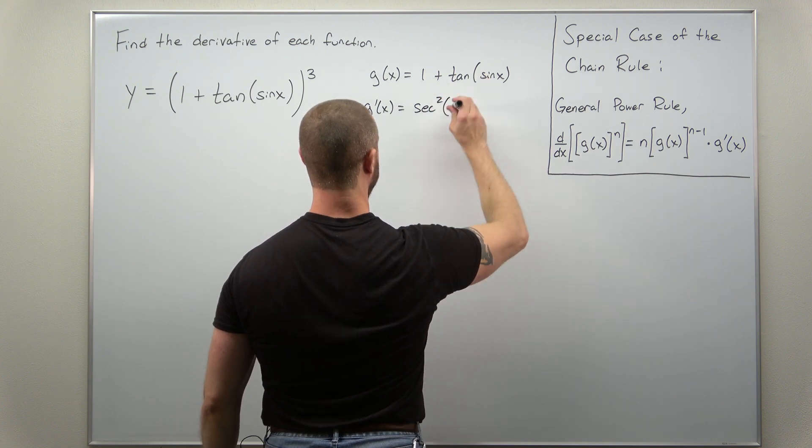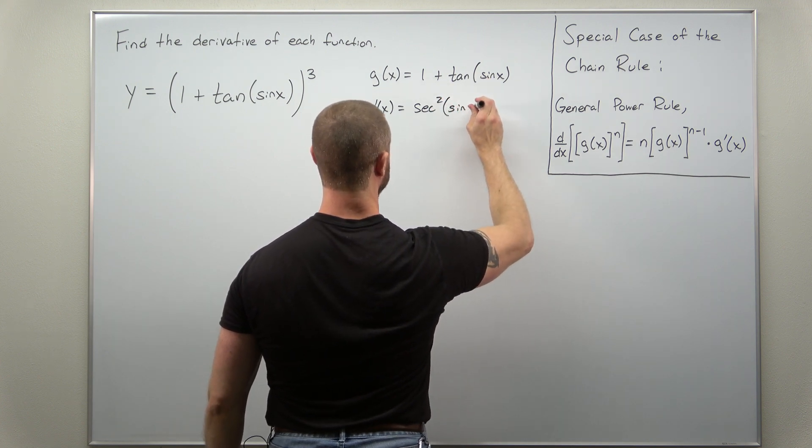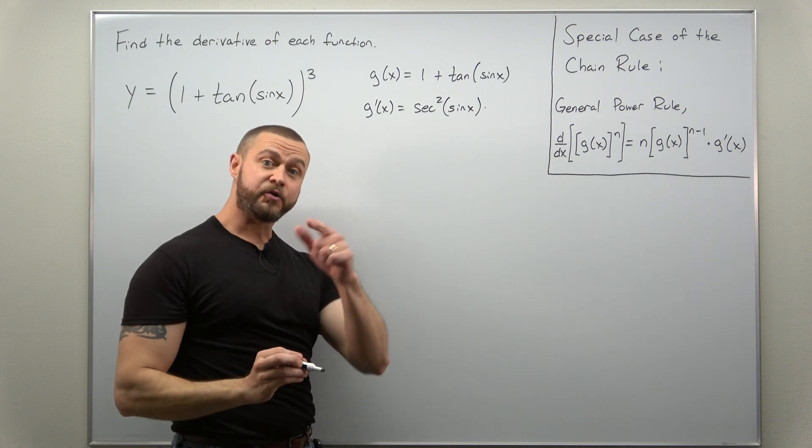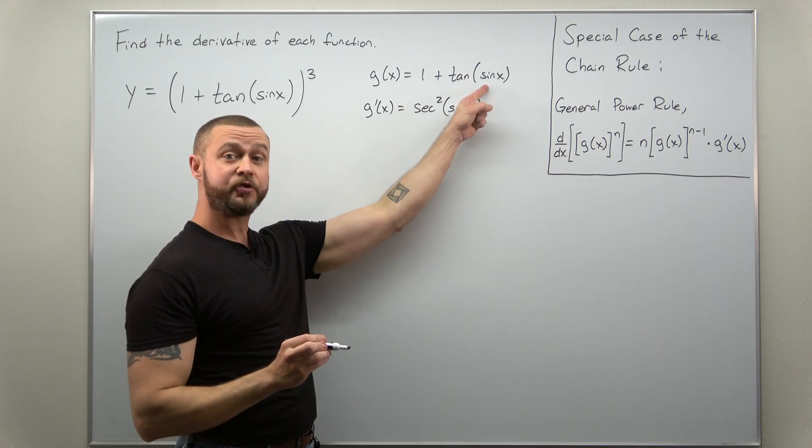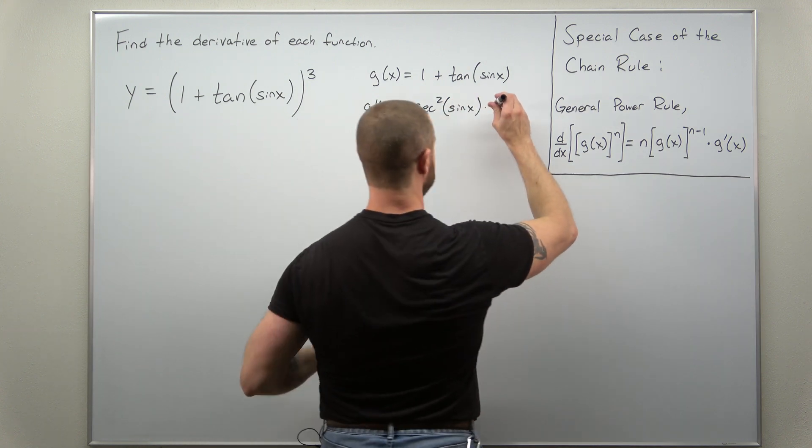So we get secant squared of our inner function, and then we multiply by the derivative of the inner function here, the derivative of sine of x is cosine of x.